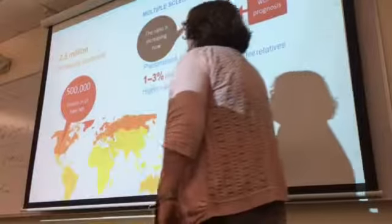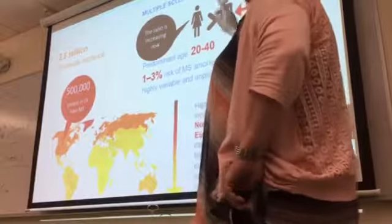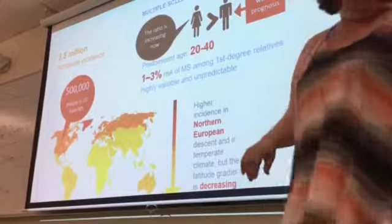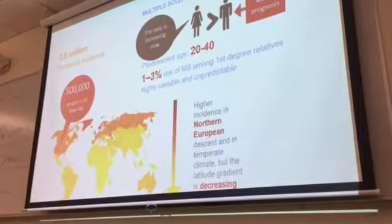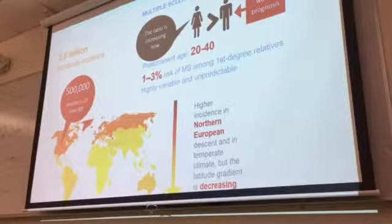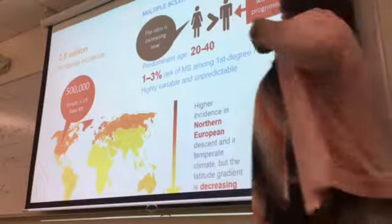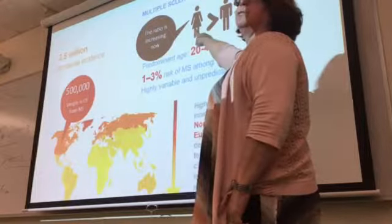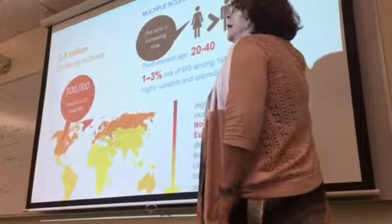Myelin sheath plaque causes interference with neurological function, leading to immobility. There are 2.5 million people worldwide with MS — 500,000 in the United States alone — with approximately 200 new cases each week.